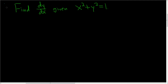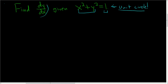We're asked to find dy/dx given the equation x squared plus y squared equals 1. You might notice that this is the unit circle. So essentially by finding dy/dx, we are going to find a formula for the slope at any point on the unit circle.